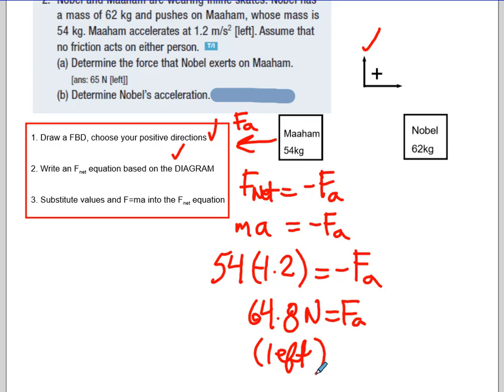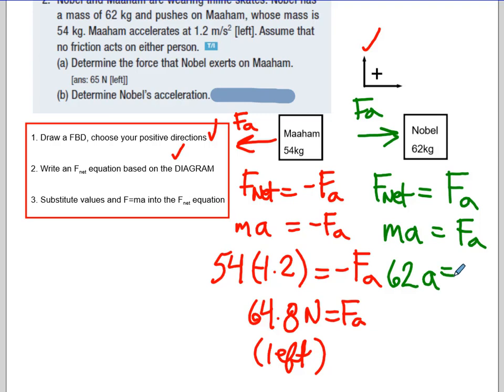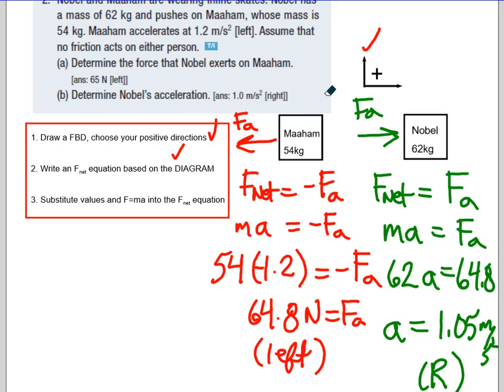Determine Nobel's acceleration. Now we could do the exact same problem. Only this time there's a force acting on Nobel. We actually happen to know what it is. We know that it's 64.8 or 65. But I'm going to start the same process. I'm going to write my F net statement. I'm going to say it's equal to FA. I'm going to swap out the F net with mass times acceleration. Still equal to FA. And then I'm going to fill in some numbers. So the mass of Nobel is 62. We don't know the acceleration. And we know that the applied force is 64.8. If I divide both sides, I get 64.8 divided by 62. And I get 1.05 meters per second squared to the right. Let's have a look. And 1.05, pretty much the same answer, going to the right.